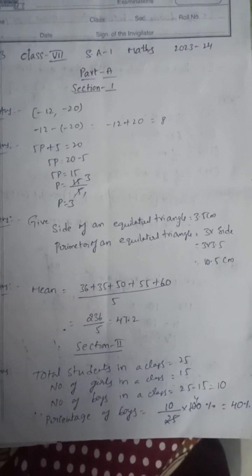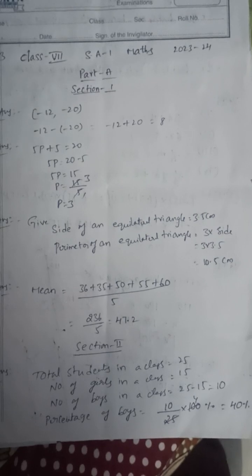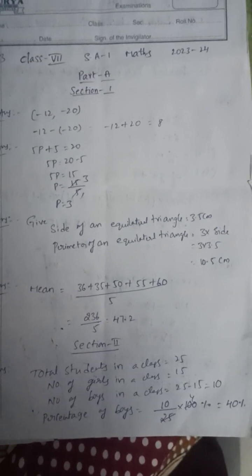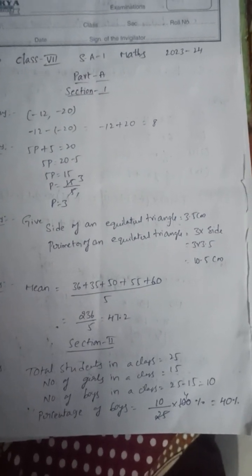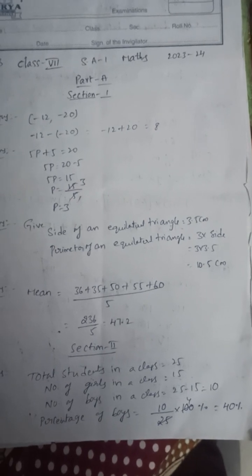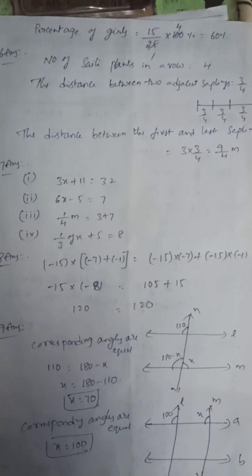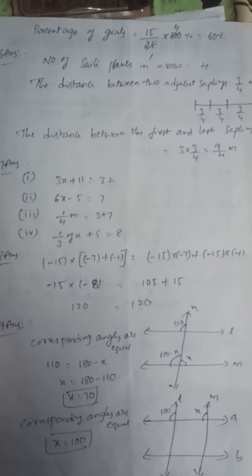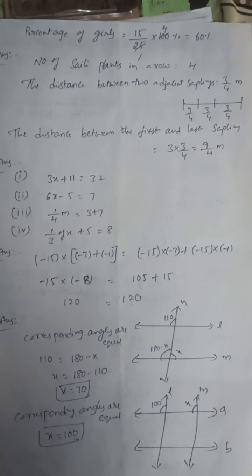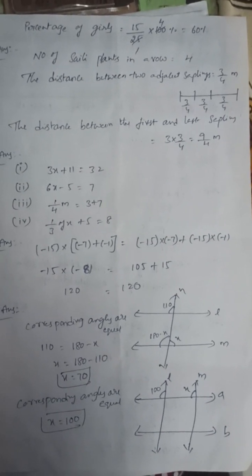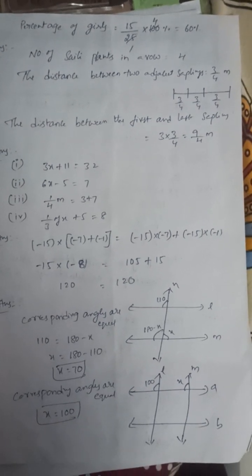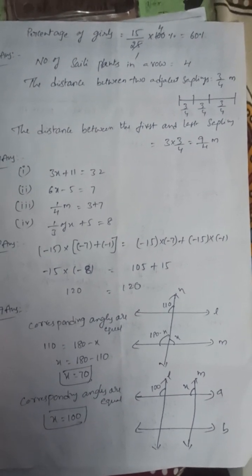So total students is 25, number of girls is 15, number of boys is 25 minus 15, that is 10. Now the percentage of boys is 10 by 25 into 100. 25 goes into 25 once, 4 times, so that is 40 percent.